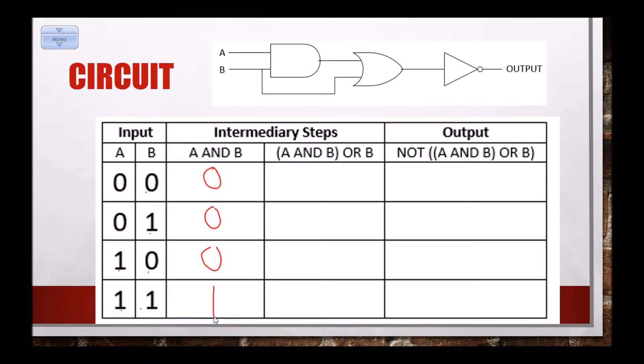Now I'm going to go to this OR, so I'm going to take the OR of that thing we just did, and B, so zero or zero is zero, zero or one is one, zero or zero is zero, and one or one is one. Okay, so that's my output that far.